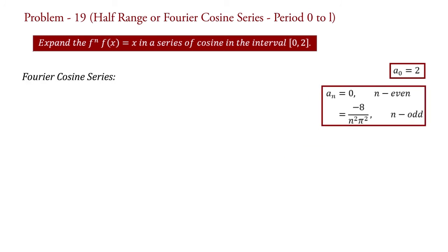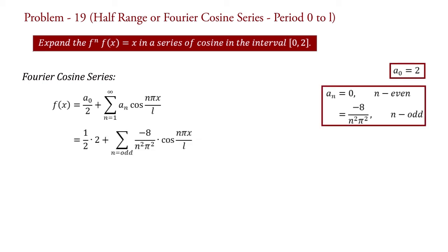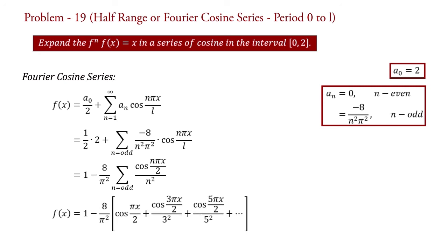For the cosine series, substituting the values of coefficients a0 and an, we get: f(x) = (1/2)·2 + summation over odd n of (−8/n²π²)·cos(nπx/2). Taking −8/π² outside the summation: f(x) = 1 − (8/π²) · summation over odd n of cos(nπx/2)/n². In expanded form: f(x) = 1 − (8/π²)·[cos(πx/2) + cos(3πx/2)/3² + cos(5πx/2)/5² + ...]. This is the required Fourier series of the given function.